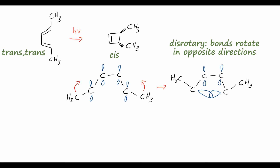I'll leave it up to you to determine the product when working with the cis-trans variant of the substituted diene instead of the trans-trans variant. Remember, because this reaction is driven by light, it will follow a disrotary process — use that in determining what the stereochemistry of your cyclic product will be.